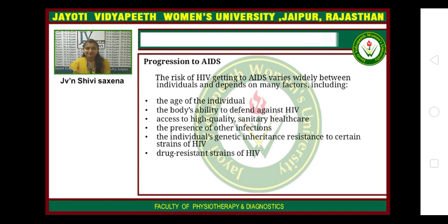Progression to AIDS. The risk of HIV progressing to AIDS varies widely between individuals and depends on many factors, including the age of the individual, the body's ability to defend against HIV, access to high-quality healthcare, the presence of other infections, the individual's genetic inheritance, resistance to certain strains of HIV, and drug-resistant strains of HIV.